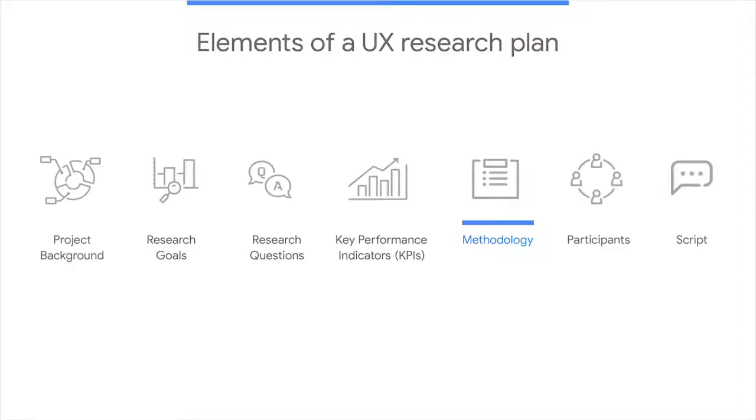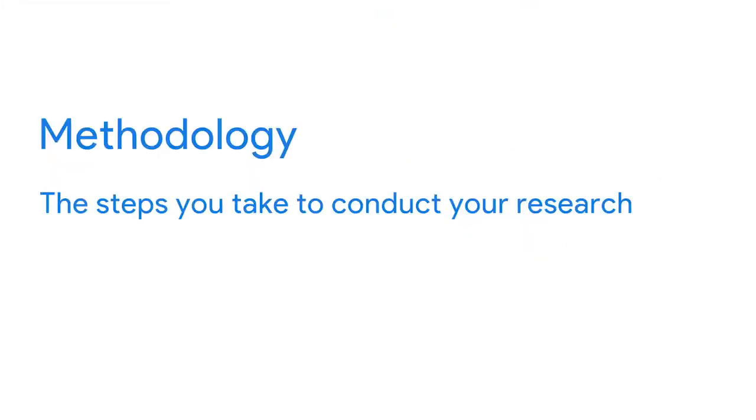Your research plan is taking shape. It's time to progress from the background and goals of your study to your plans for actually carrying it out. In this video, we'll discuss these logistical details, known as the methodology — the fifth element of your UX research plan. The methodology is the steps you take to conduct your research and will list the procedures you'll use while collecting the information you need to answer your research questions. This should include the time and place of the product tests and interviews, as well as who will conduct them and how.